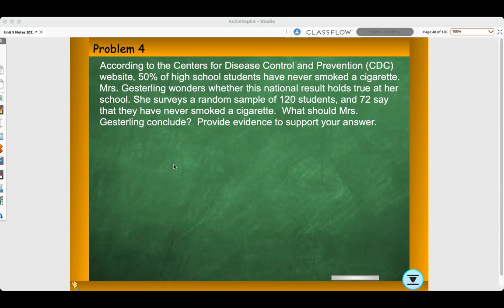Today, we're going to go over problem number four from the one proportion sample hypothesis test worksheet. According to the Center for Disease Control and Prevention website, 50% of high school students have never smoked a cigarette. Mrs. Gesterling, who used to be a teacher at Poolsville High School, wonders whether this national result holds true at her school. She surveys a random sample of 120 students and 72 say that they have never smoked a cigarette.